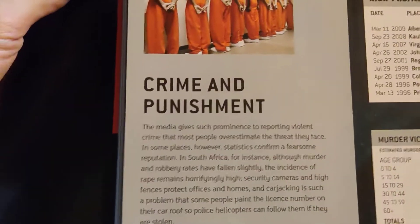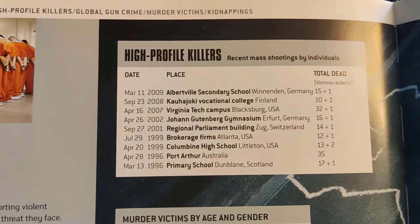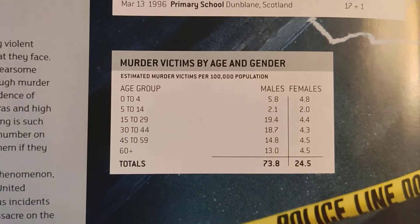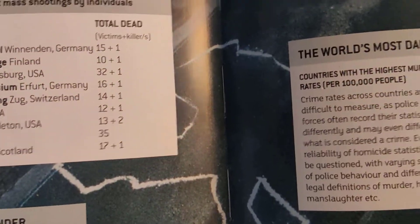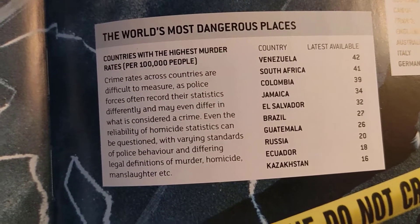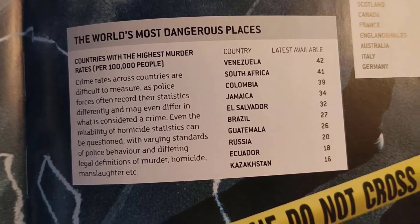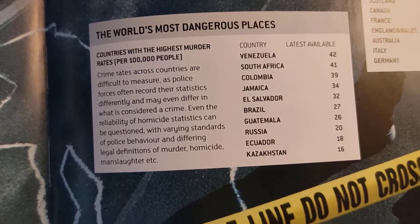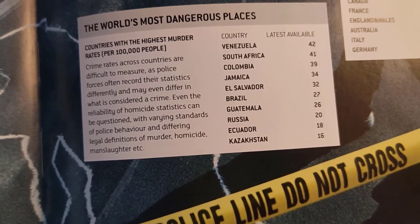This section is on the topic of crime and punishment, with tables giving statistics on high-profile killers, murder victims by age and gender, and the world's most dangerous places — including Venezuela, South Africa, Colombia, Jamaica, Brazil, Guatemala, Russia, and Ecuador.